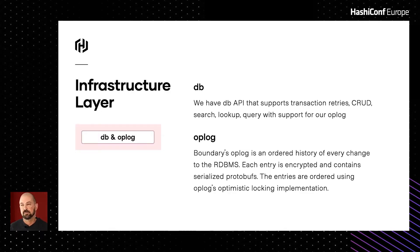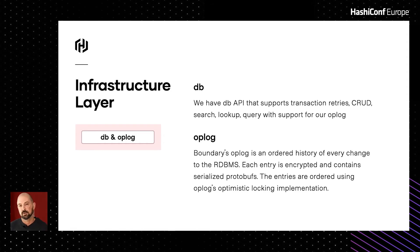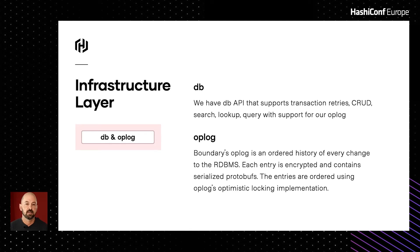The infrastructure layer in Boundary is composed mainly of two different parts. Primarily there's a database API, which provides retriable transactions and all the CRUD operations you would need — query, lookup. It also supports something called an operational log or op log. In Boundary, an op log is an ordered history of every change that goes into the database. If you do a database operation through our database API and ask the API, it'll generate an op log and store it in Boundary's database. Each entry in the op log is encrypted and contains the serialized protobufs necessary to make that change. The entries are ordered, which required optimistic locking to provide serialization.